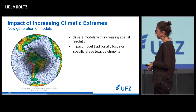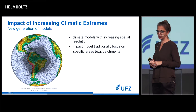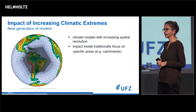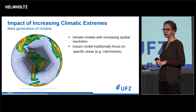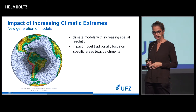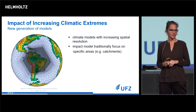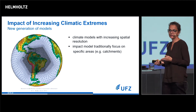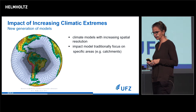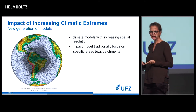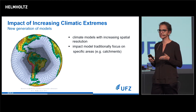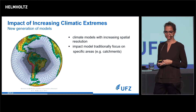The next thing we need is impact models, modeling hydrology, vegetation, et cetera. The problem with impact models is that, traditionally, they focus on specific areas, like catchments in hydrology. And the models are not made such that you can easily transfer them to other regions in the world.